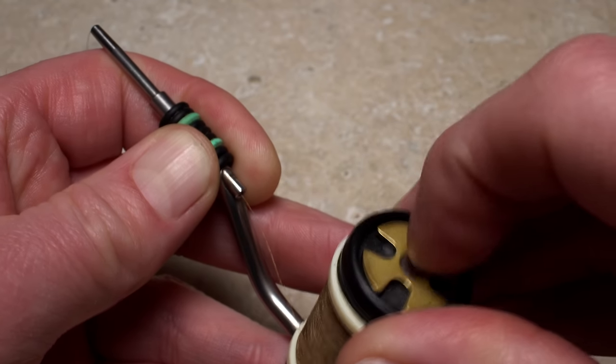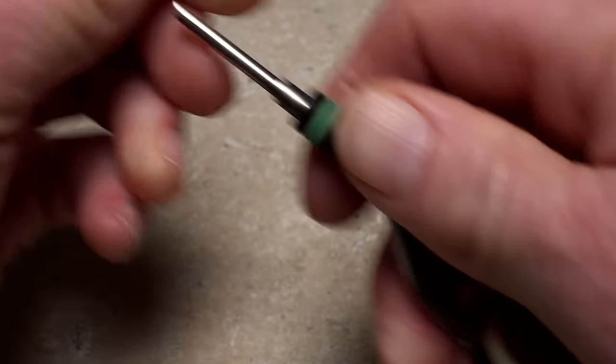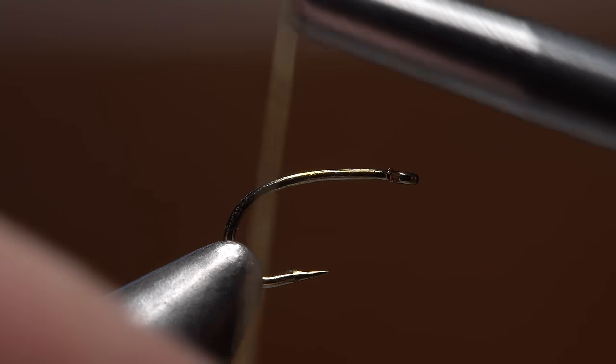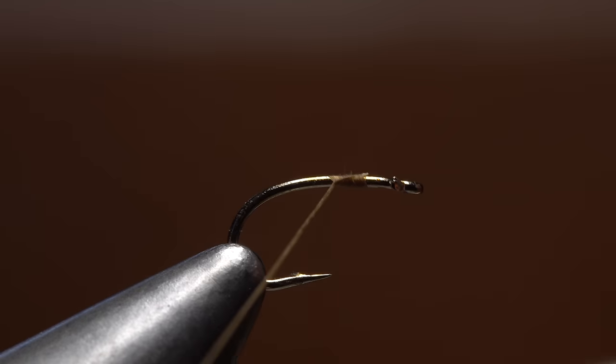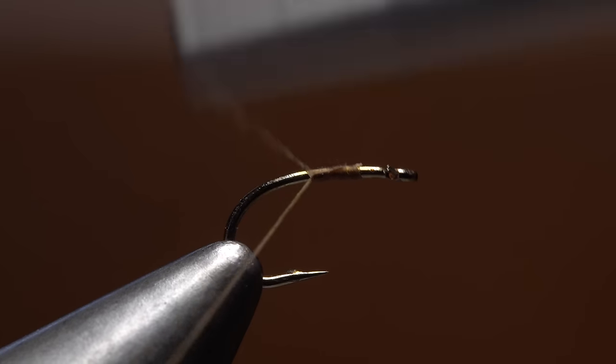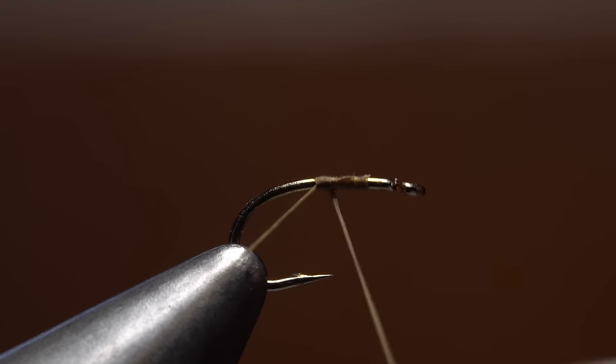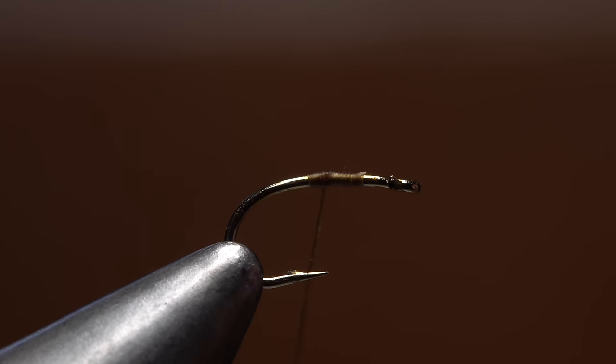For thread, Matt loads a bobbin with, well, you already know what he uses. Start your thread on the hook shank, leaving an eye-length space behind the eye, and take a few reps rearward before snipping or breaking off the tag. End with your tying thread at about the hook point.